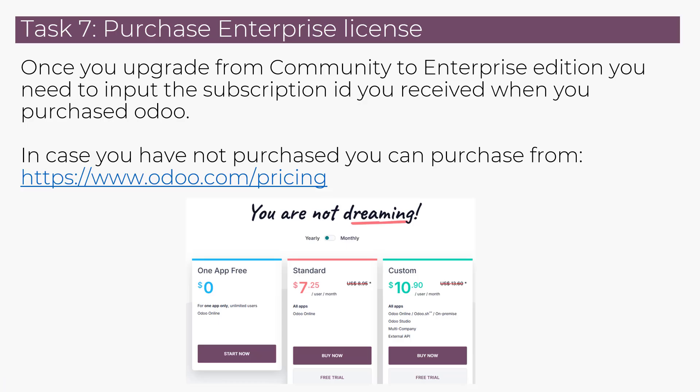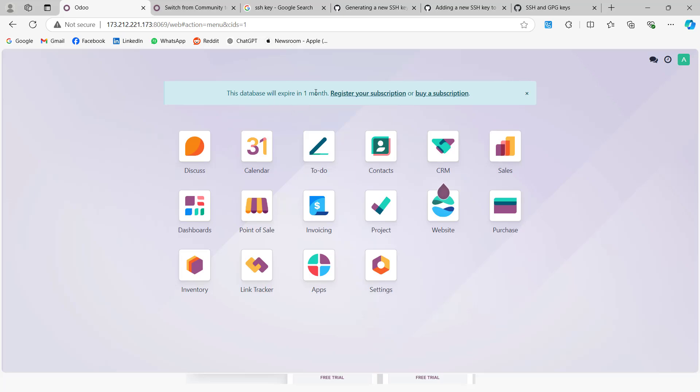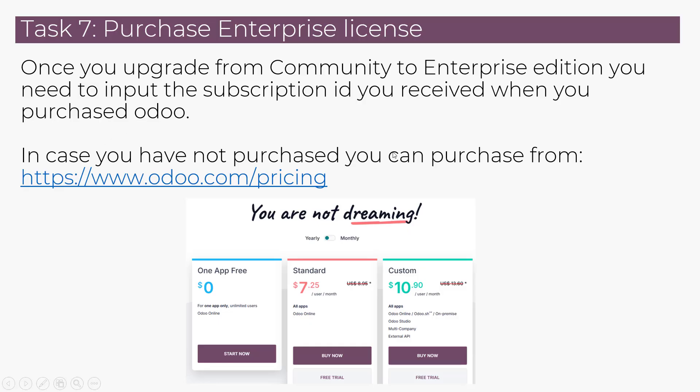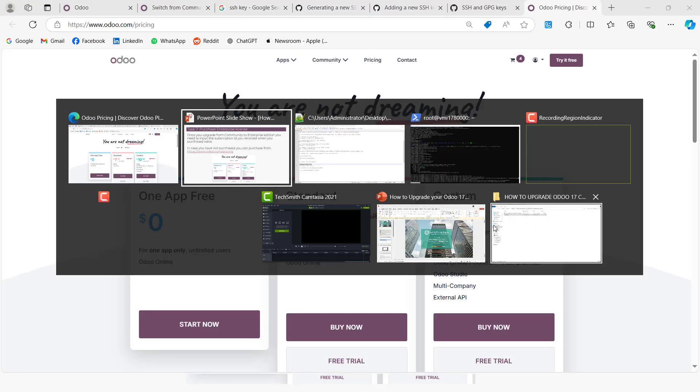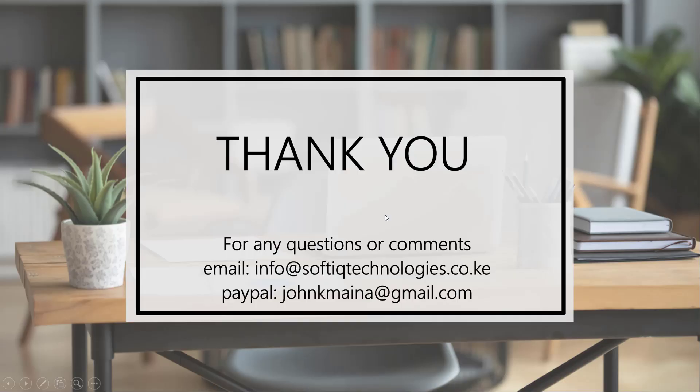Once you upgrade from community to enterprise edition, you need to input the subscription ID you received when you purchased Odoo, because right now it comes with one month and after that it expires. In case you have not purchased, you can do so at odoo.com/pricing. That concludes our video — we have been able to upgrade Odoo 17 community to enterprise for production. In our next video, we will cover how to set up Nginx and access Odoo on a domain. Thanks for watching, and feel free to email us at info@softiqtechnologies.co.ke.